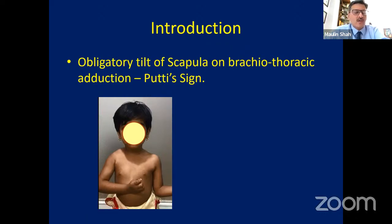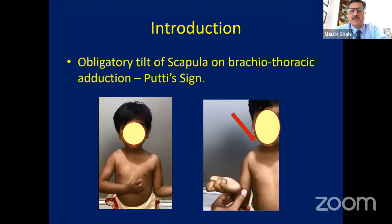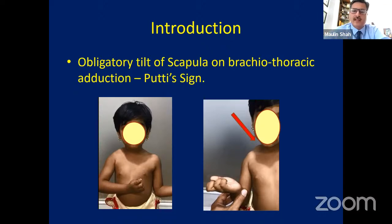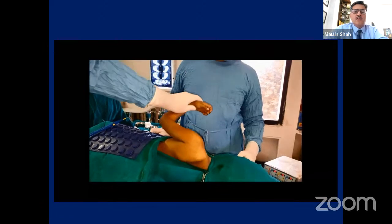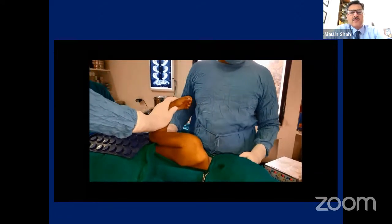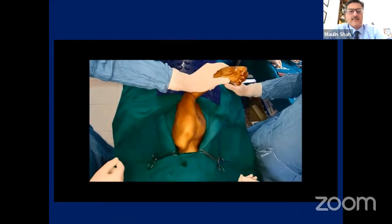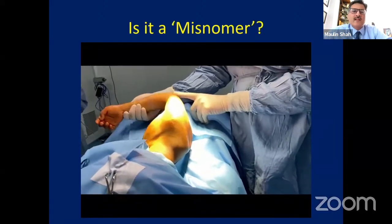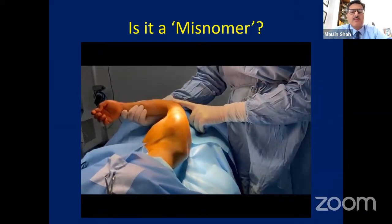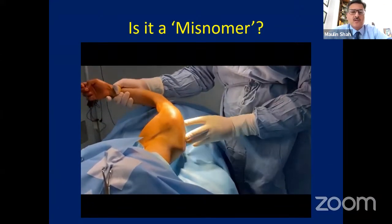This child is unable to keep the arm adducted — the moment you adduct it, the superomedial angle of scapula becomes prominent. In many children, this is cosmetically disabling. The shoulder remains drooped and young girls always complain their clothing sleeves fall down. Surgically, when you adduct the arm, the medial and superior angle of scapula becomes prominent. This is a misnomer — it's not just abduction but also passive external rotation that brings the scapula more prominently. So it's not only abduction contracture; the antero-inferior capsule is also responsible.